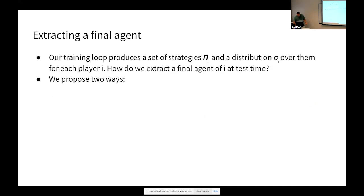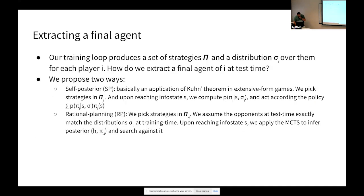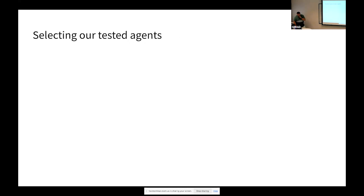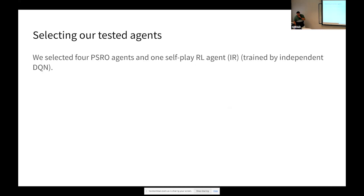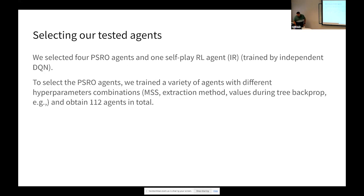I didn't want to leave out the human study. We built up a number of agents by tweaking different settings and ended up with 112 different agents. We can't play all 112 against humans and draw meaningful conclusions, so we selected the two most competitive agents — those that individually maximize their utility — the most cooperative agents — where the combined total utility across both players is highest — and the fairest agents — where there's minimal imbalance in utilities between the two players.